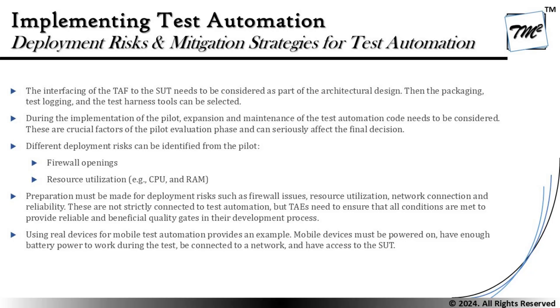We are talking about the possible risks related to automation implementation, and the journey starts right from the planning phase itself. We must consider risks related to implementation of the architecture and the test solution. From the very beginning of planning, we can consider factors which might influence possible risk areas related to design of the architecture, implementation of the test, and the deployment aspect. We'll be deep diving into what those possible risk areas are, including the interfacing of the TAF to the SUT, which needs to be considered as part of architectural design.